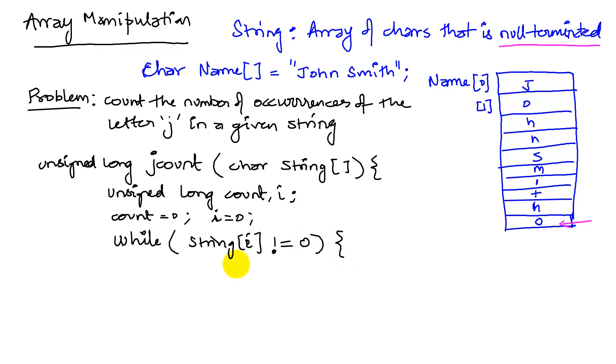If it's not equal to zero, it means that I have still some item that I can check whether it's a j or not. I say I go in and I don't know whether this item is j or not. So I'm going to do if string of i is equal to.